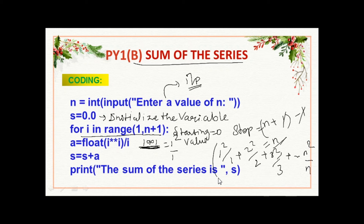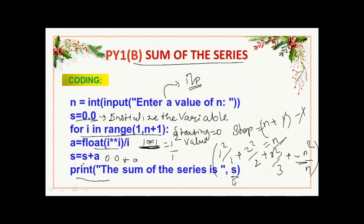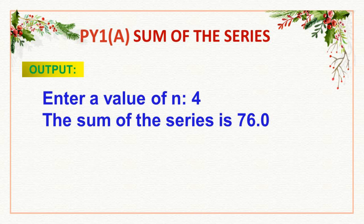The condition is: a is equal to float of i double-asterisk i, which means i to the power of i divided by i — that is 1 squared by 1. We access elements such as 1 squared by 1 plus 2 squared by 2 plus 3 cubed by 3 up to n to the power n by n. Then s equal to s plus a, initializing s as 0.0 and adding each a. Finally, print the sum of the series, which is s. The output: enter a value of n is 4, the sum of the series is 76.0.